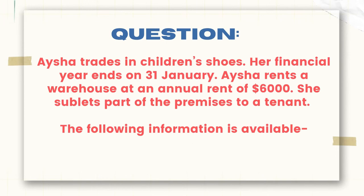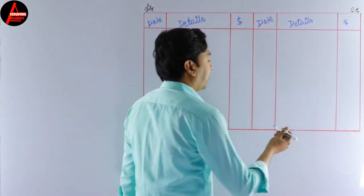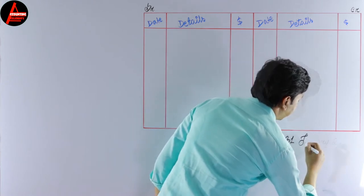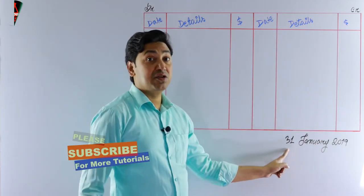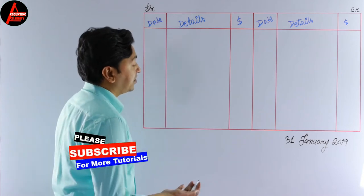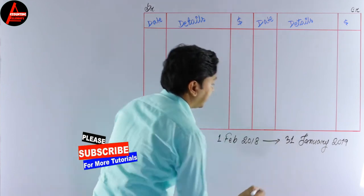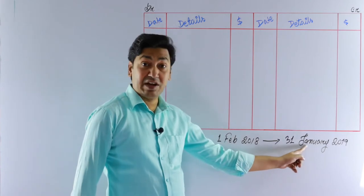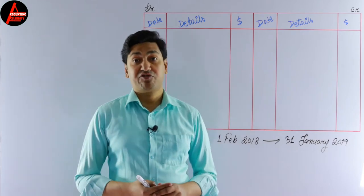The financial year ends on 31st January 2019. So what is the beginning of the year? It will be 1st February 2018. Check: it is 12 months from 1st February 2018 to 31st January — so this is the financial period for Aisha.